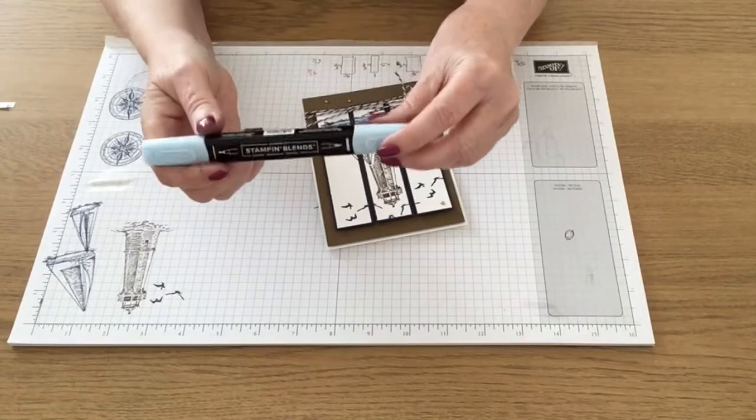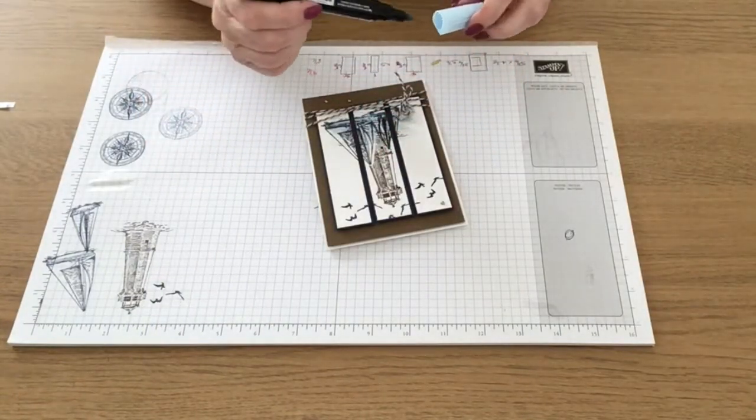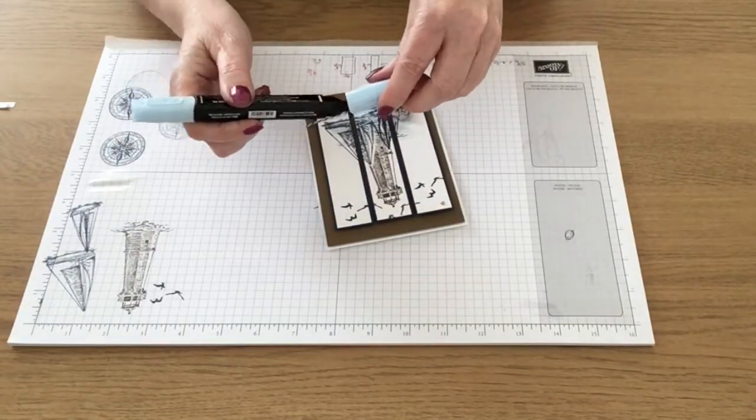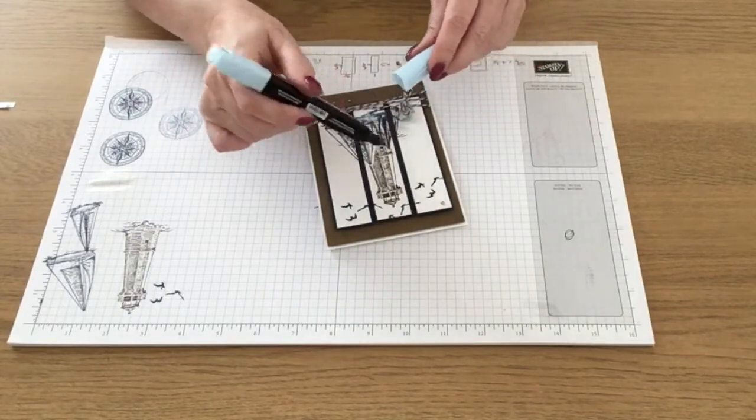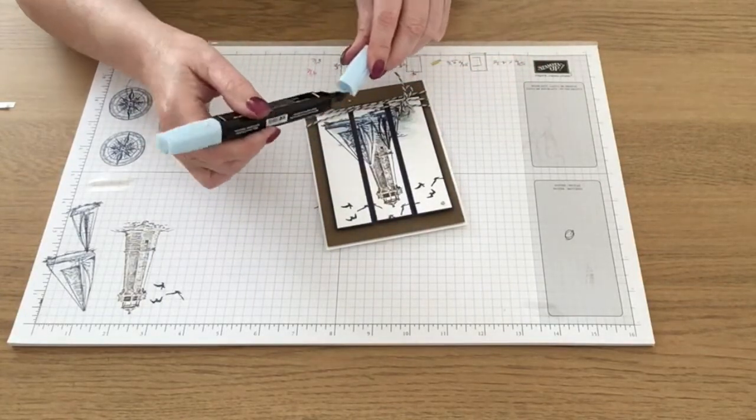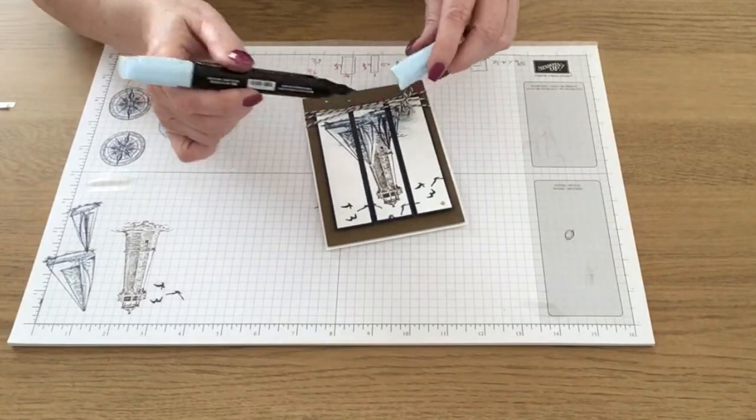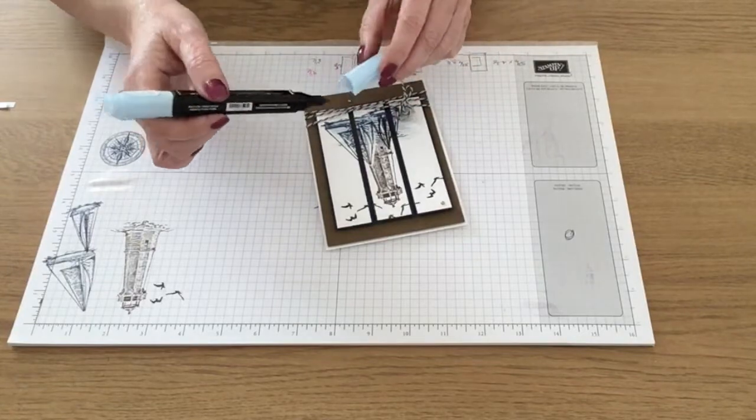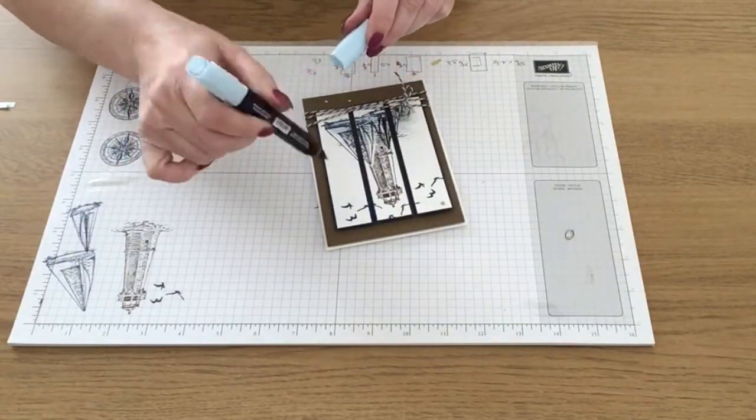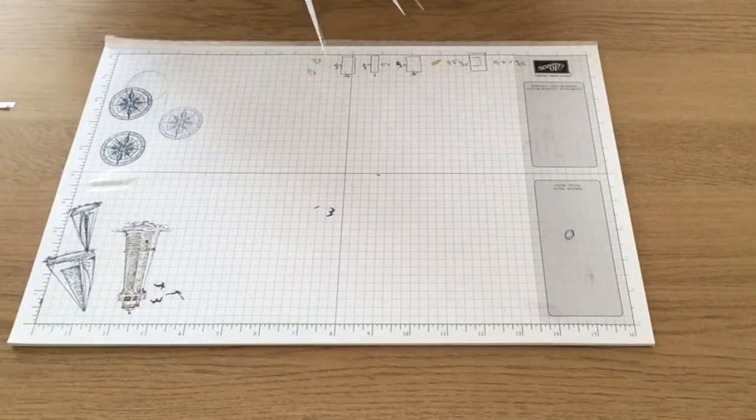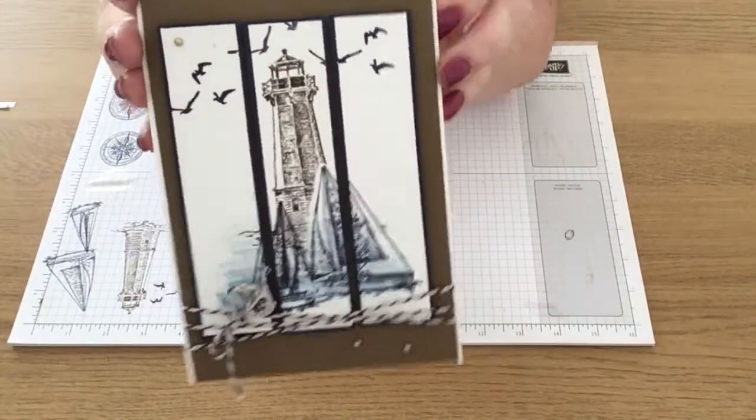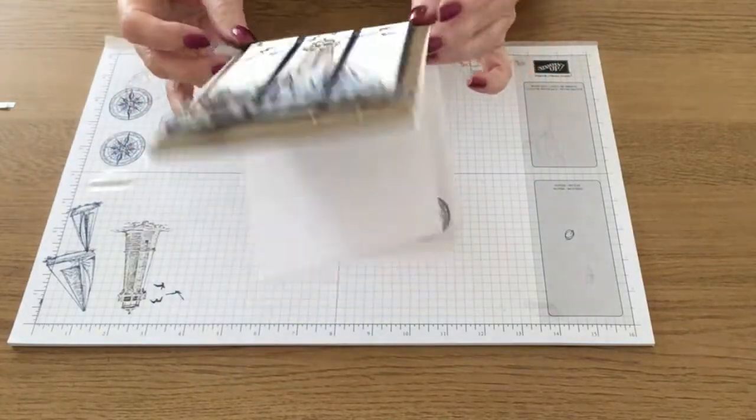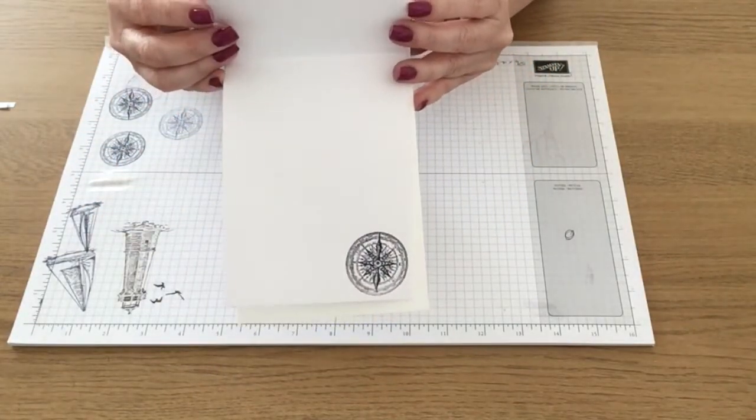Now just one little added extra. I'm using balmy blue and I'm using the brush tip end and I'm just flicking some of the balmy blue blend onto the front of the card. I just felt that the white was a little bit plain and just needed a bit of something else. I'm not sure how well you're going to see this but there are some very faint blue speckles just on the front of the card and this is the inside.